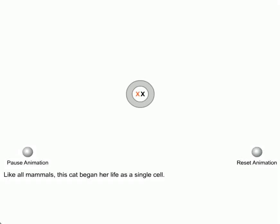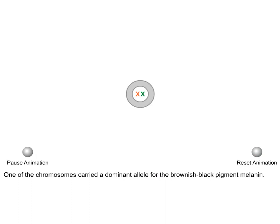Like all mammals, this cat began her life as a single cell. That cell had two X chromosomes, one from each parent. One of the chromosomes carried a dominant allele for the brownish-black pigment melanin. The other carried an allele that specifies rust-colored fur.